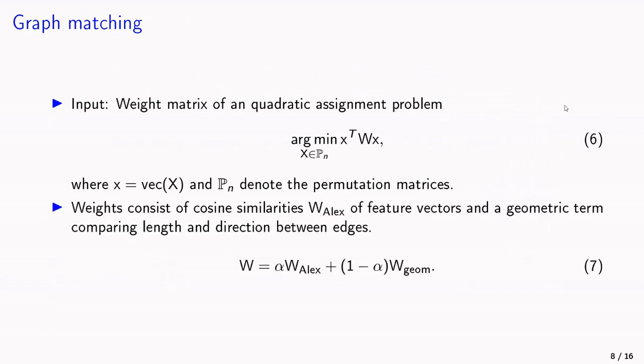And the weight matrix W here is a linear combination between W_Alex and W_Geometric. W_Alex has as entries cosine similarities of feature vectors, and the feature vectors have been obtained with some AlexNet. Then W_Geometric has as entries differences between spatial distances between key points.